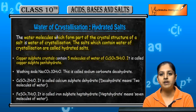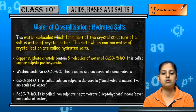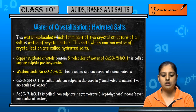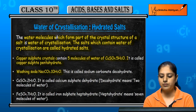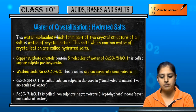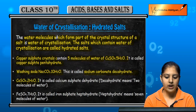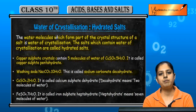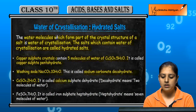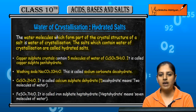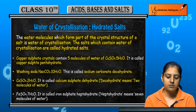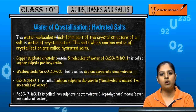Similarly, washing soda is Na2CO3·10H2O, called sodium carbonate decahydrate, with ten molecules of water of crystallization. Calcium sulfate is written as CaSO4·2H2O, called calcium sulfate dihydrate. Dihydrate means there are two molecules of water of crystallization.